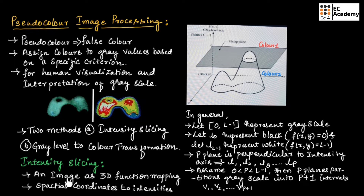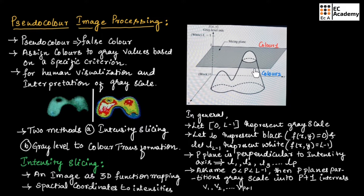In intensity slicing, an image is considered as a 3D function mapping and it is plotted as spatial coordinates to the intensity, as shown in this figure. We consider a plane at a certain level relative to the coordinates, which slices the intensity value of the image into two halves. For the upper section we can assign one color, and for the lower section we can assign another color.